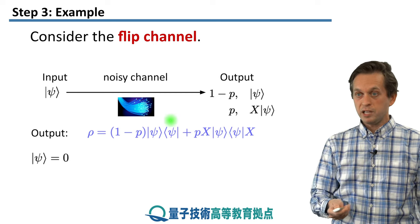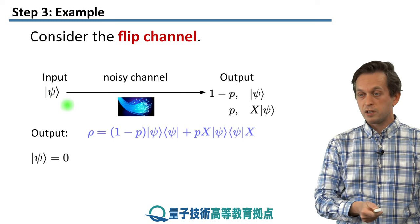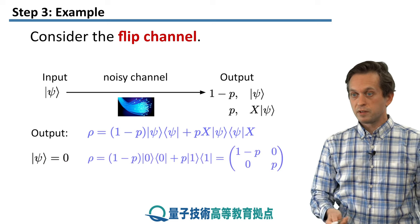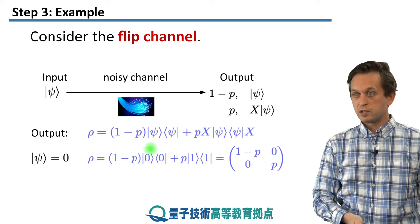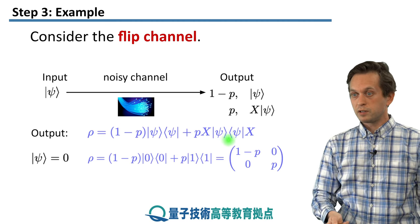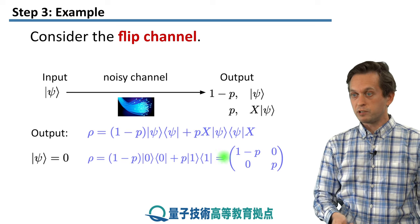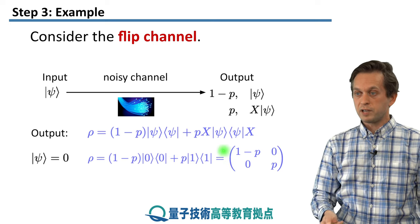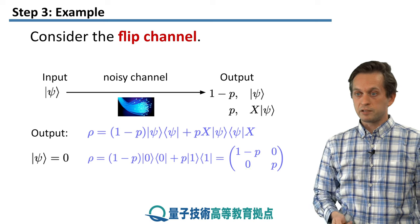For example, if our input state, the state that we feed into our noisy optical fiber is 0, then what we get is as follows. So we just substitute zeros for state psi, 1 over there, because we applied the X operator and it flipped 0 into 1. And in matrix representation, it's given by this. On the diagonals we've got 1 minus P and P, and the off-diagonals are 0.